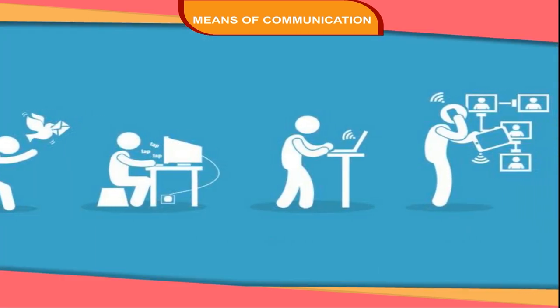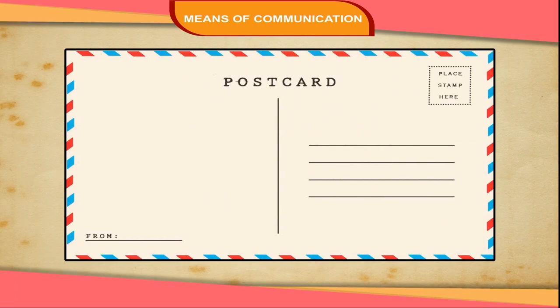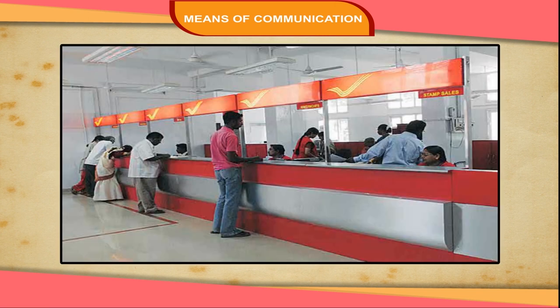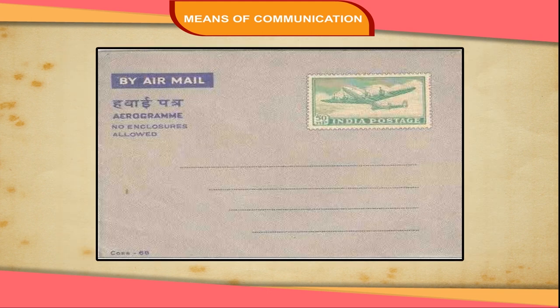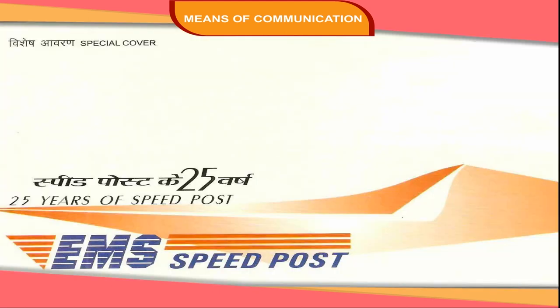Post Office: We can send our message on a postcard, inland letter or in an envelope. We buy these things from a post office. We also use an aerogram to send our message to other countries. You should write the complete address clearly and also write the PIN code in the address. It helps the letter to reach on time and at the right place. We can send urgent messages by speed post.